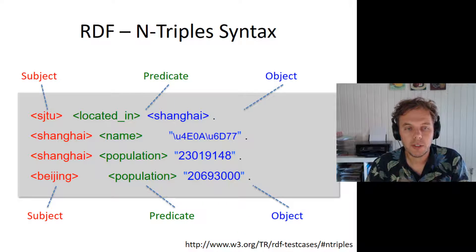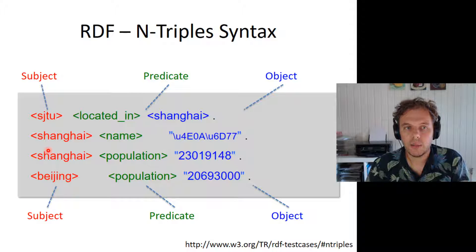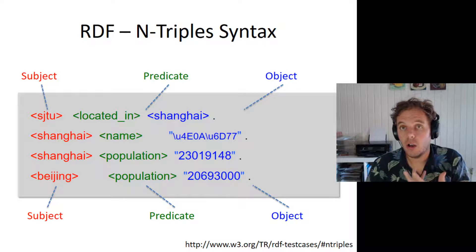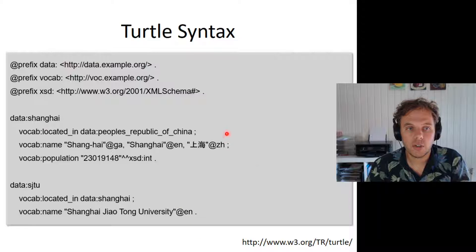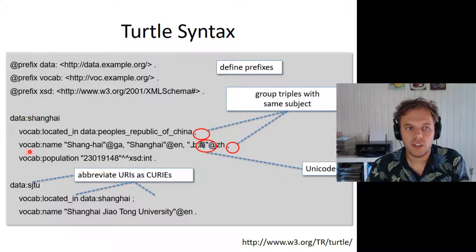There's a slightly more useful syntax called RDF Turtle, which looks a lot like n-triples. The nice thing is that if I say something about Shanghai twice — for example, a name and a population — I can omit the repeated subject using a semicolon. So these semicolons allow you to say: data:Shanghai, located in People's Republic of China; name Shanghai; etc. — all still about the same subject. It's basically a shorthand. We also have commas. I won't go into too much detail on the exact syntax, but you can look it up at the linked website.